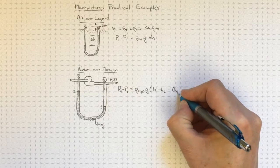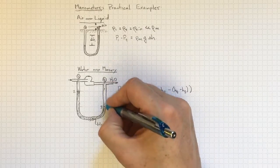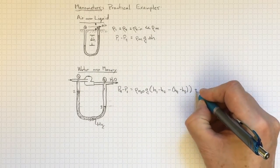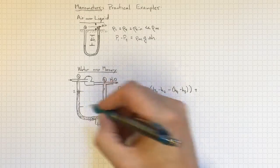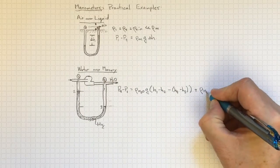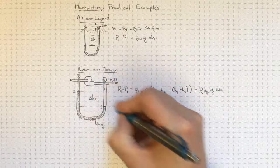So we've got the two water lengths there plus the change in pressure associated with this length through the mercury. That'll be rho of Hg, rho of mercury, times G times the delta H in between.